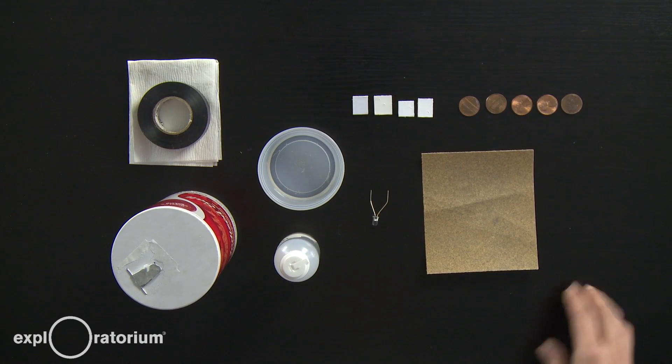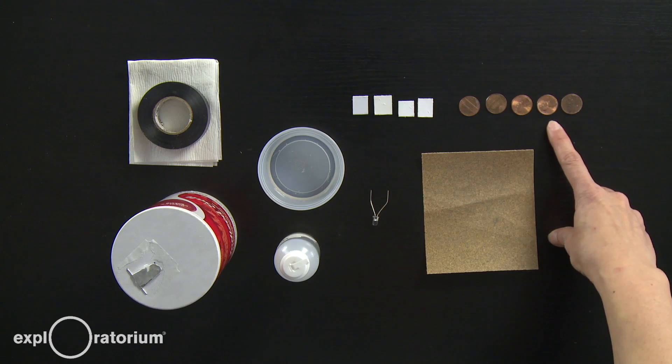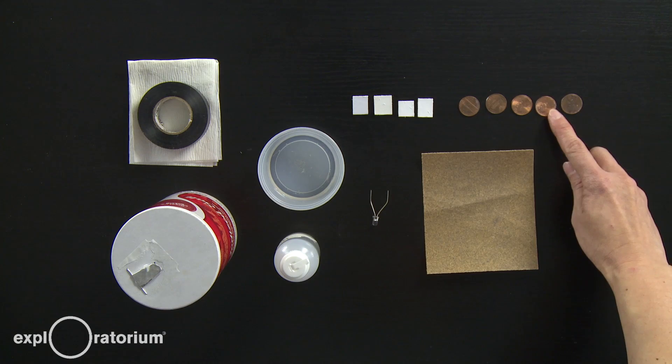In order to make a penny battery, you'll need five US pennies, four of which were made after 1982. So look on the side that has Lincoln's head and check out the date.